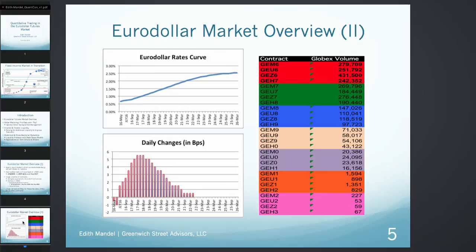It looks so nice, and if you think in terms of factors, it would really take very few factors to explain this sort of move — you clearly don't see 20 degrees of freedom here. It's typically the case: when moves are big, they're well explained by a low-dimensional factor model. When moves are small, they could be all over the place — noise that's very difficult to capture with just a few factors.